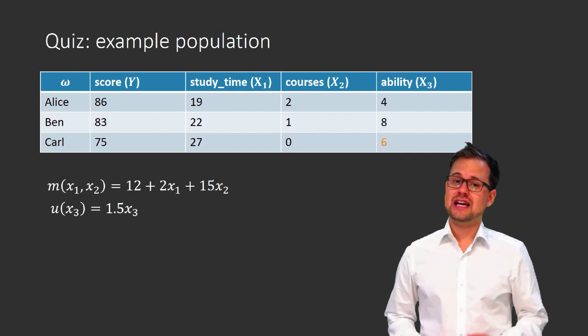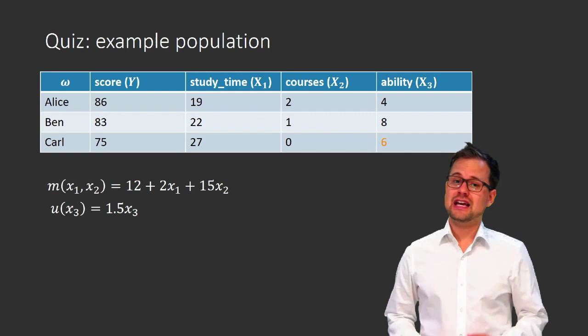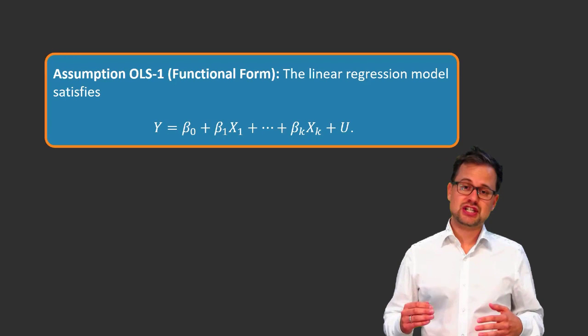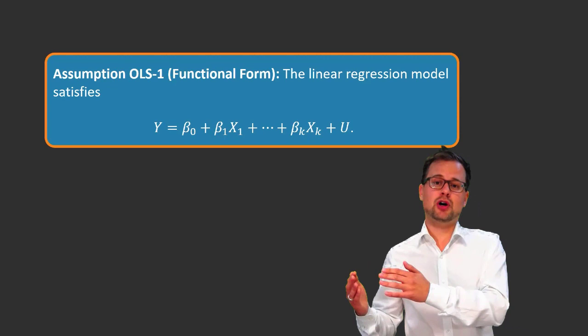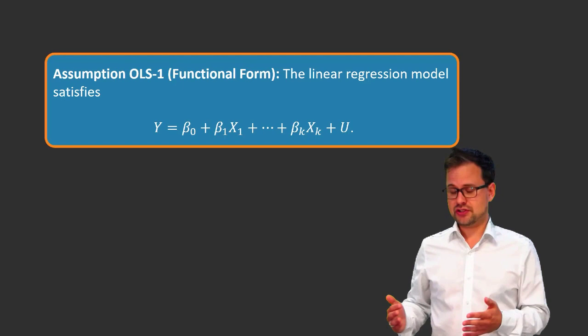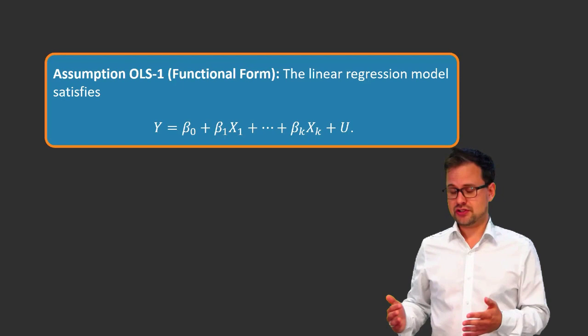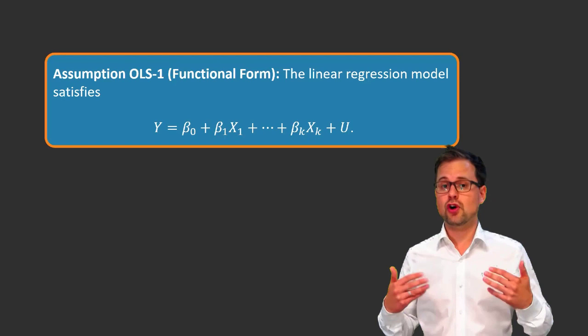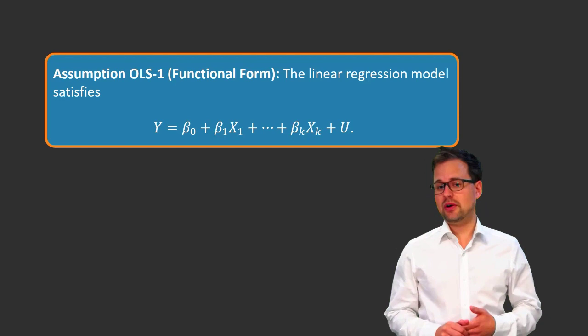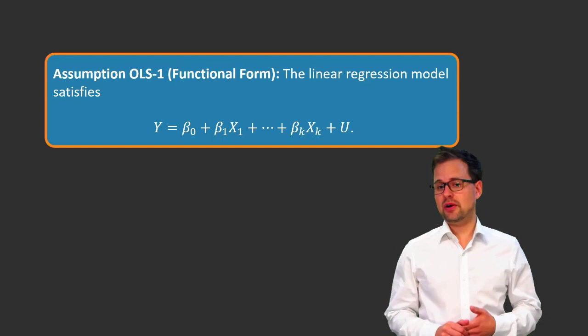We will organize our ideas about the linear regression model using a series of mathematical assumptions. Our first assumption — call it OLS1 — summarizes what we've assumed so far about how the regressors and the unobserved component translate into outcome Y. In terms of a production function, this imposes a functional form on the transformation process that translates inputs into output. Using just OLS1, we can already do interesting things — for example, we can talk about causal effects.